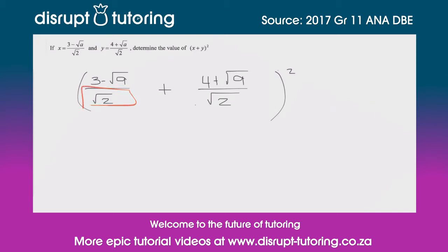What's really important here is to note that we've got the same denominator, which always helps, meaning we can add the two terms together immediately. Over √2 we have 3 - √a + 4 + √a.